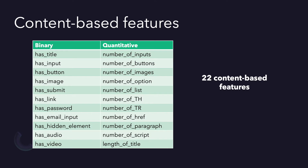This is our feature list, and as you can estimate, each of them will have a numerical value. I will explain the reason why we have numerical values later. Now we will code a function for each feature with the help of BeautifulSoup. Let's start.